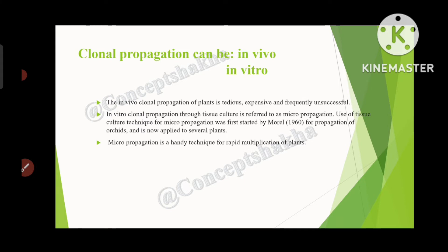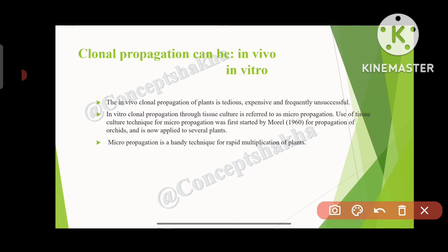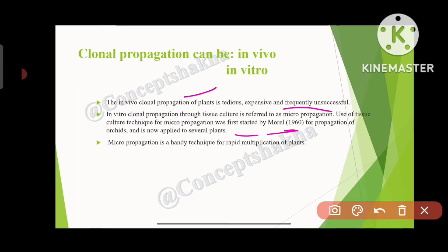Clonal propagation can be in vivo or in vitro. In vivo clonal propagation of plants is tedious, expensive, and frequently unsuccessful. In vitro clonal propagation through tissue culture is referred to as micropropagation. Use of tissue culture technique for micropropagation was first started by Morel in 1960 for propagation of orchids, and it is now applied to several plants. Micropropagation is a handy technique for rapid multiplication of plants.